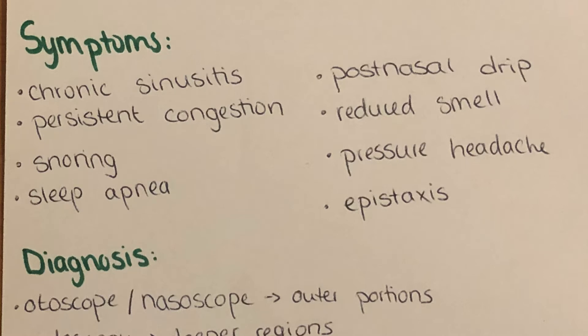Symptoms of a polyp include chronic sinusitis, persistent congestion of the nose, snoring, sleep apnea due to obstruction of the nostril and airways, post-nasal drip, reduced smell, pressure headache, and epistaxis — which is the medical term for nosebleed. I also made a video about that.